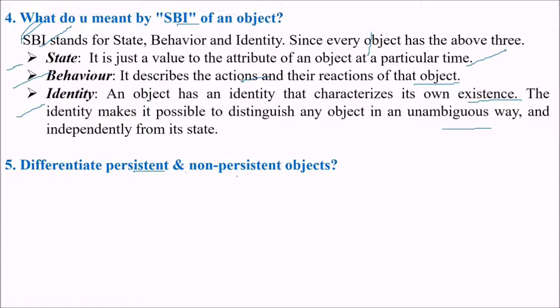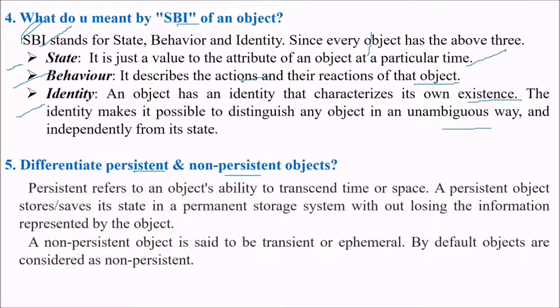Differentiate between the persistent and non-persistent objects. Persistent refers to an object's ability to transcend time or space. Persistent objects save the state in a permanent storage system without losing the information represented by the object. That is why it is persistent.